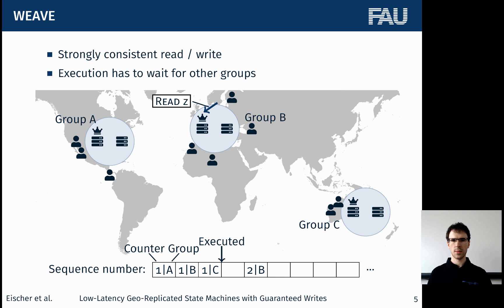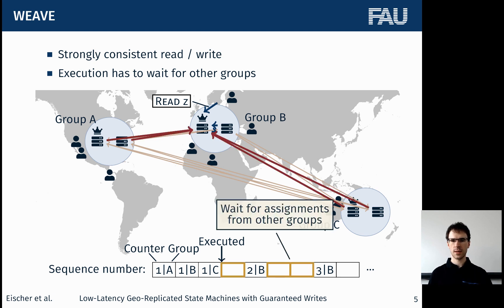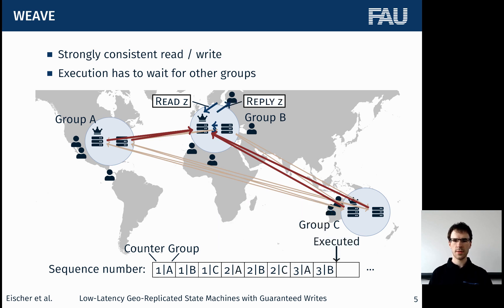We are also able to execute regular requests in a strongly consistent way. This works by having the client send its request to the leader, which then together with its group assigns a sequence number to that request. But right now we can't execute the request yet because there are still gaps in the sequence numbers which have to be closed first. Therefore the group has to wait until it receives assignments from other groups. Once these have arrived, it can execute the request and send a reply back to the client.